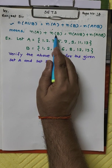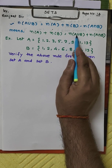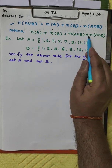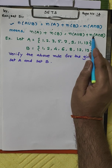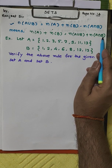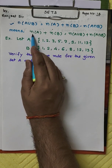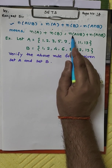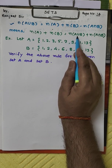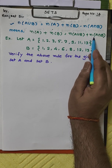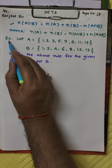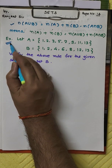It means that number of A plus number of B is equal to number of A union B plus number of A intersection B. This gives us the second rule: n(A) + n(B) = n(A∪B) + n(A∩B). Now let's verify this with the help of an example.